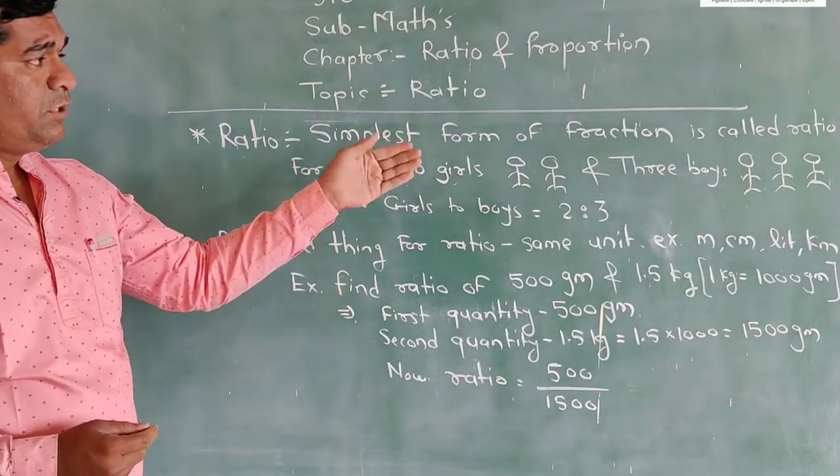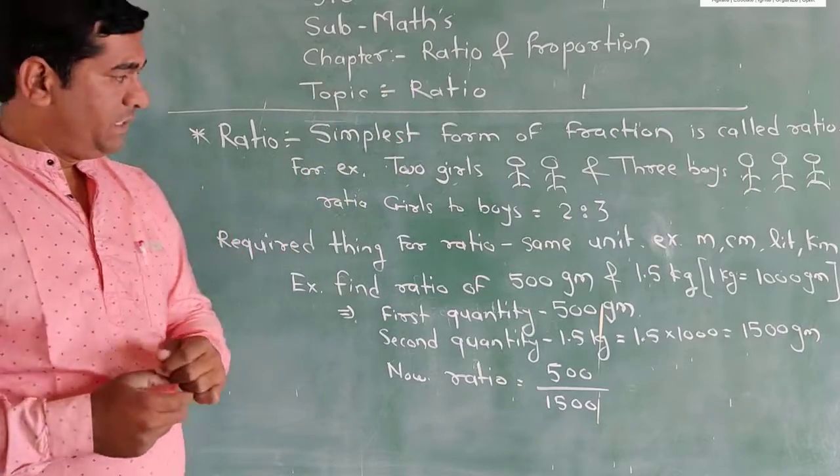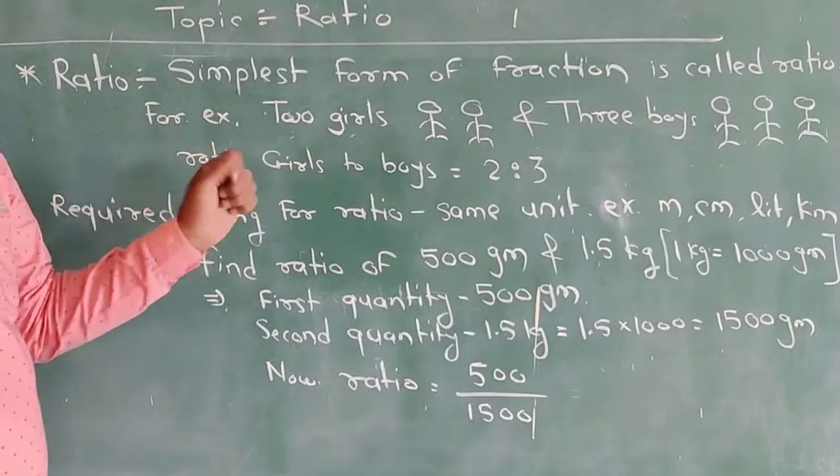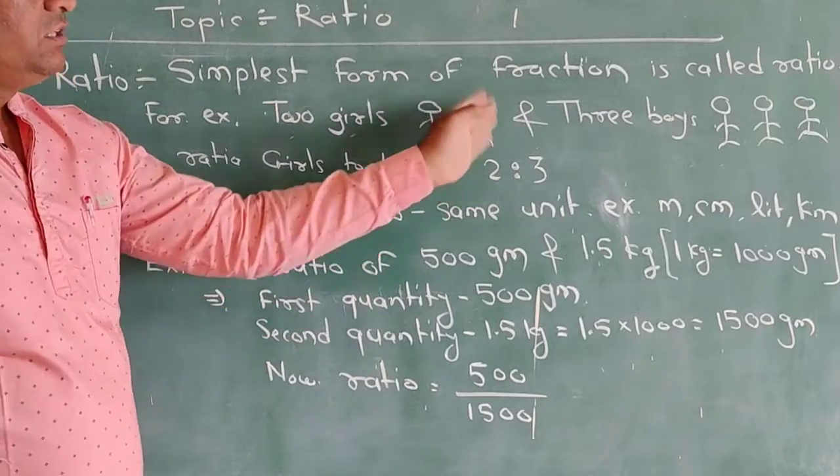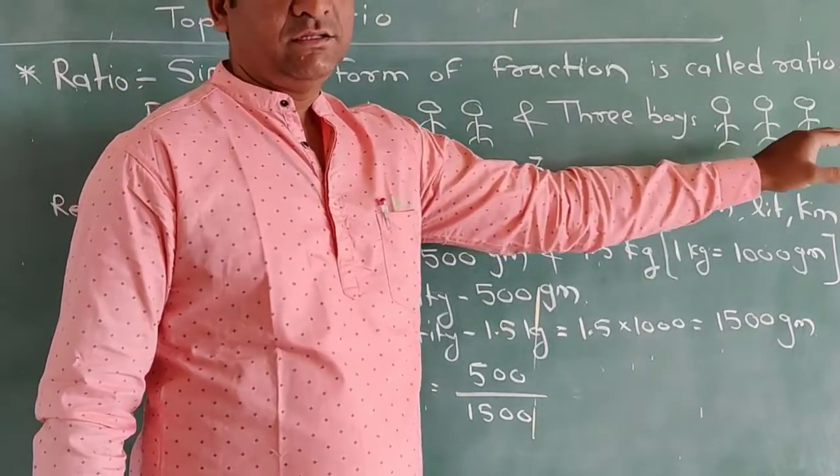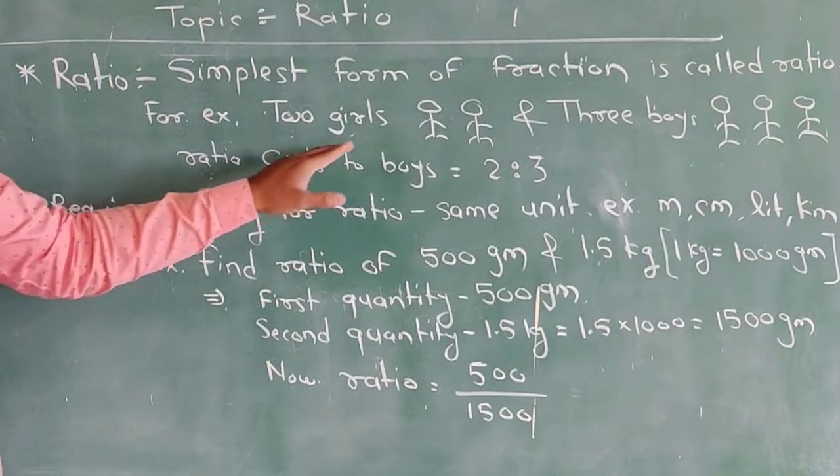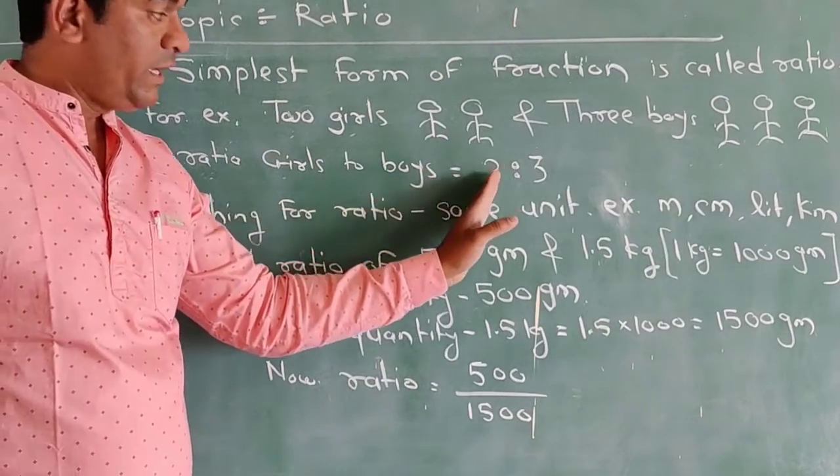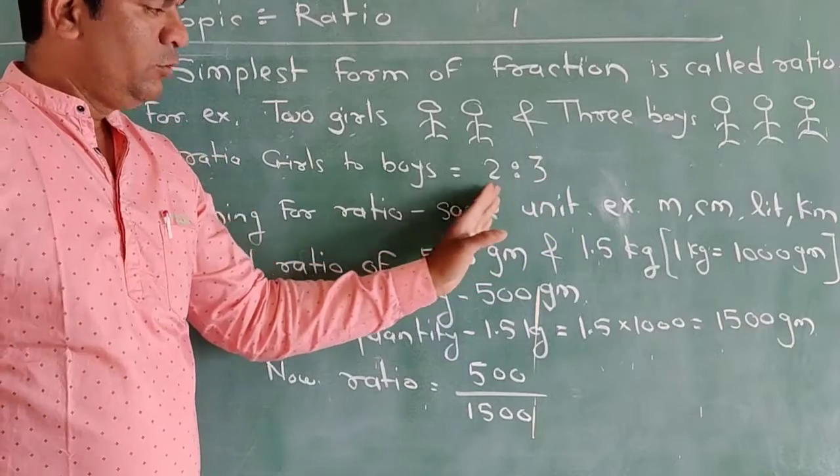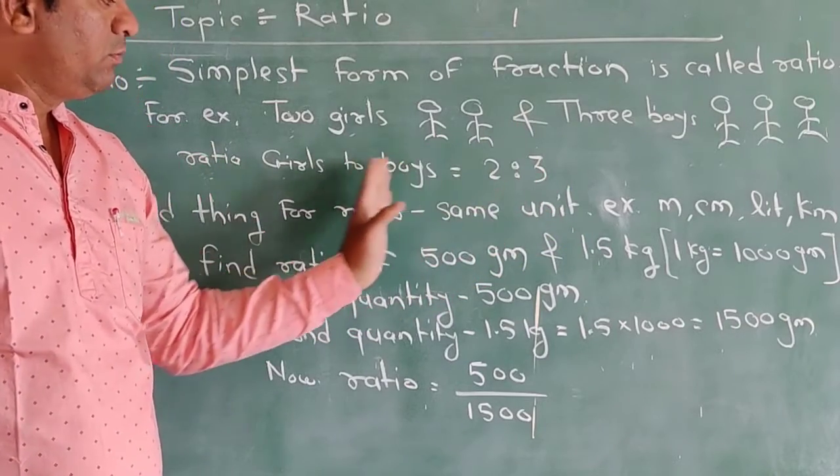So let us take an example of the simplest form. Two girls: first and second, and three boys: one, two, and three. How we write the ratio there? The ratio of girls to boys means 2:3. This is the ratio of girls to boys.